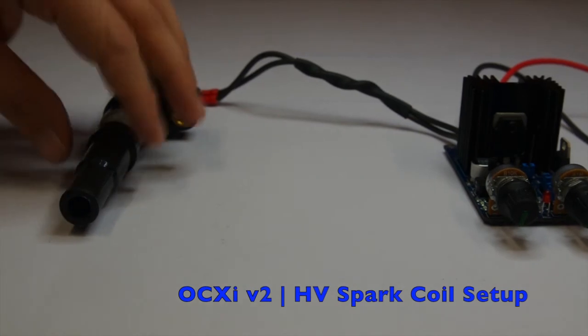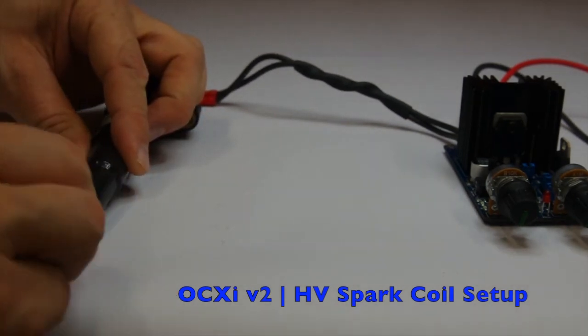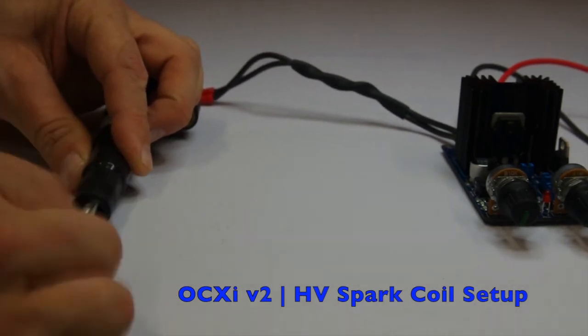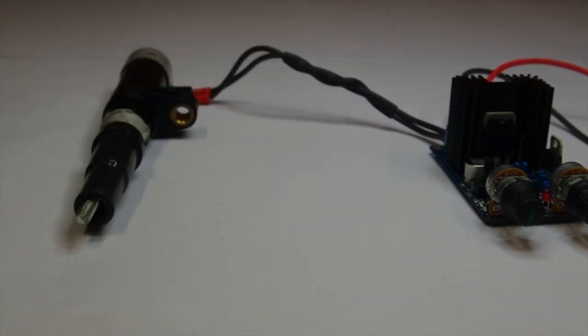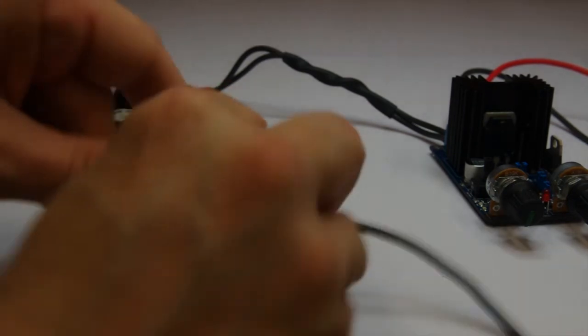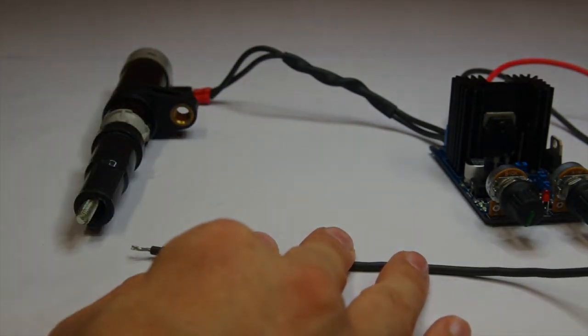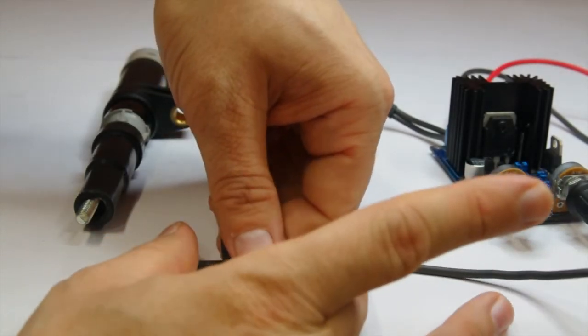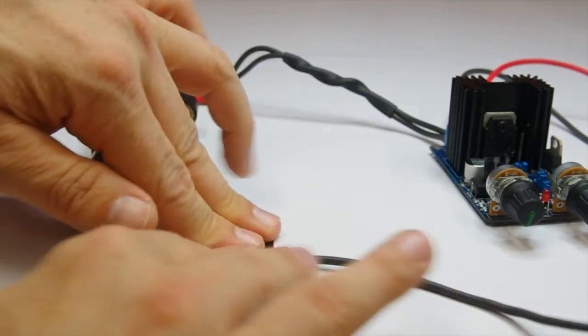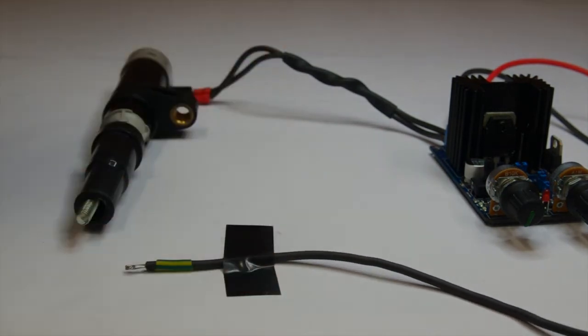Here you can see me setting up the high voltage spark coil with the OCXI. First of all I am going to put a bolt into the end of the high voltage spark coil just so we have a contact point. And then I am going to get a contact from the ground terminal of the OCXI and attach that near the spark coil so that we can make contact.